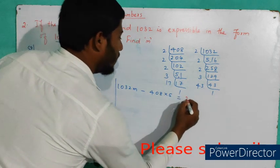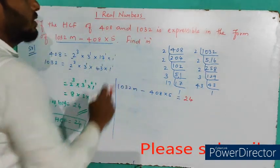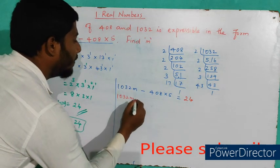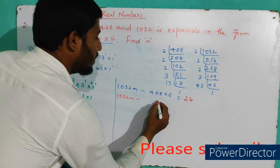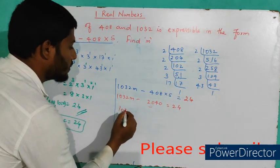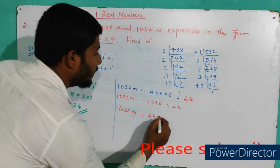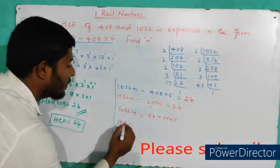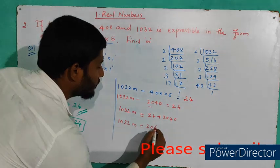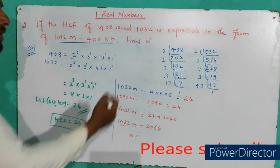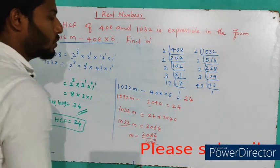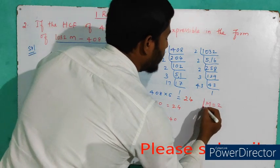Our HCF is 24. Setting 1032m − 408 × 5 = 24: multiply 408 × 5 = 2040. Moving it to the other side: 1032m = 24 + 2040 = 2064. Dividing both sides by 1032 gives m = 2064 ÷ 1032 = 2. Therefore, the value of m is 2.